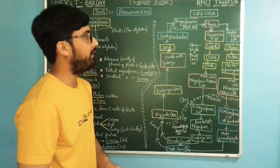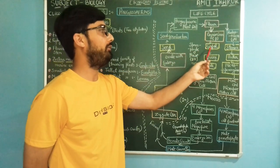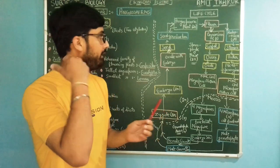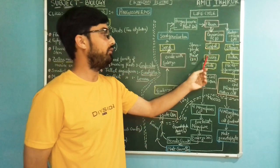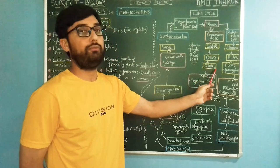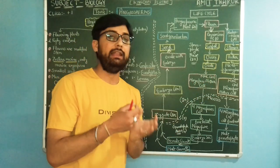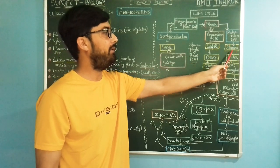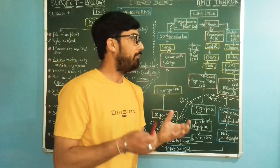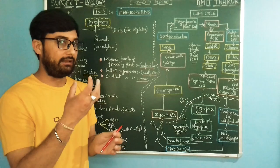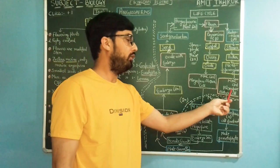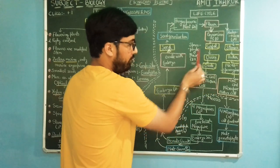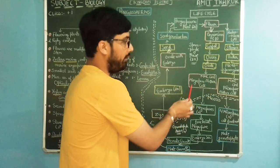The gynoecium (female reproductive part) gives rise to different reproductive structures. The carpel gives rise to the ovary, and inside the ovary, the ovule is present. Inside the ovule, the female gamete or egg is formed. Similarly, the androecium — stamen is the collective term — gives rise to the anther, where microsporangia are formed, sac-like structures where microspore mother cells and male gametes are formed. Inside the ovule, megaspore mother cells are formed, which are diploid.